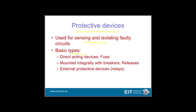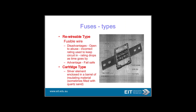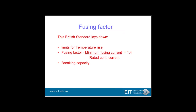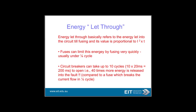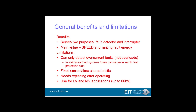Protective devices are used for sensing and isolating faulty circuits. Basic types include direct-acting fuses, devices mounted integrally with breakers, release and external protection, and protective relay devices. Fuses are the most basic. Their biggest virtue is speed and limiting fault energy. The problem with fuses is they can only detect overcurrents, not overloads, and they have a fixed current-time characteristic.